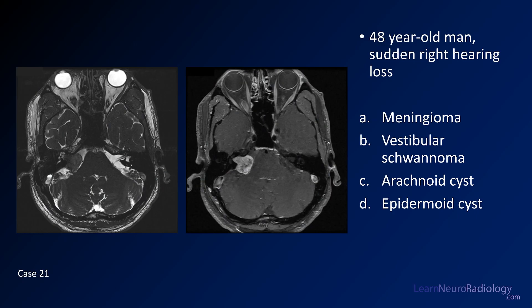Case number 21: a 48-year-old man with sudden right hearing loss. We've got a heavy T2 on the left — that's a CISS or FIESTA — and a post-contrast image on the right. Our choices are CP angle tumors: meningioma, vestibular schwannoma, arachnoid cyst, or epidermoid cyst.